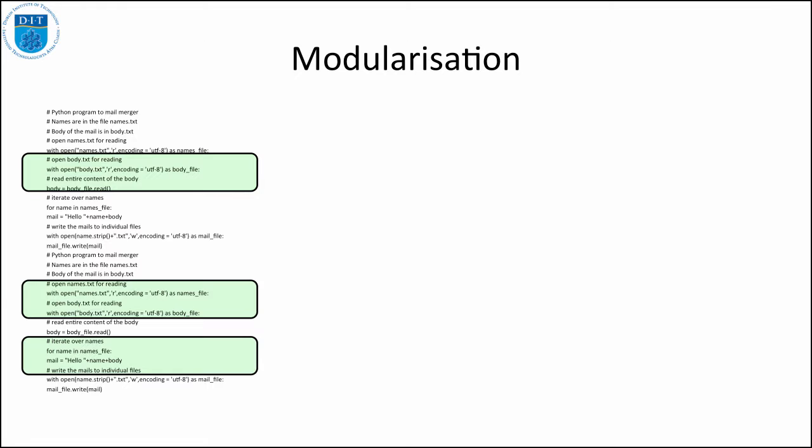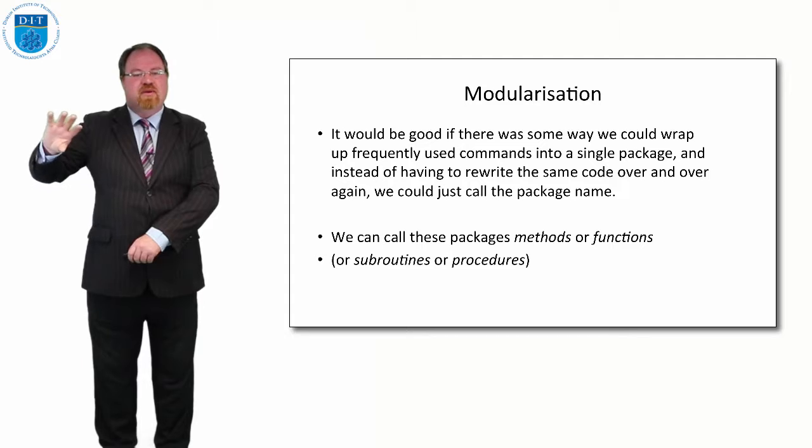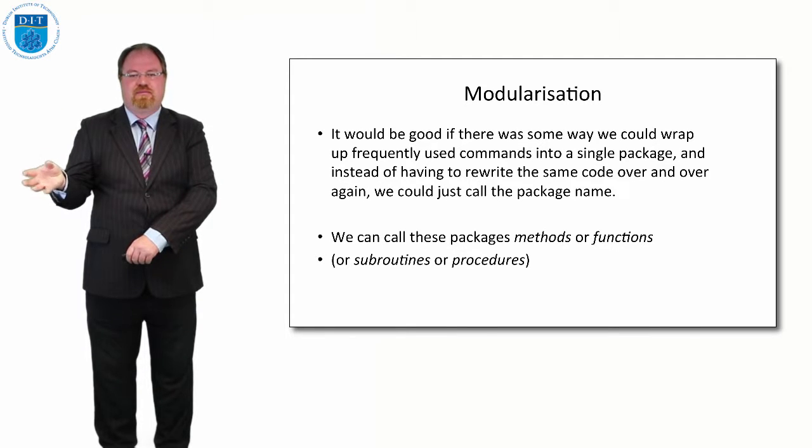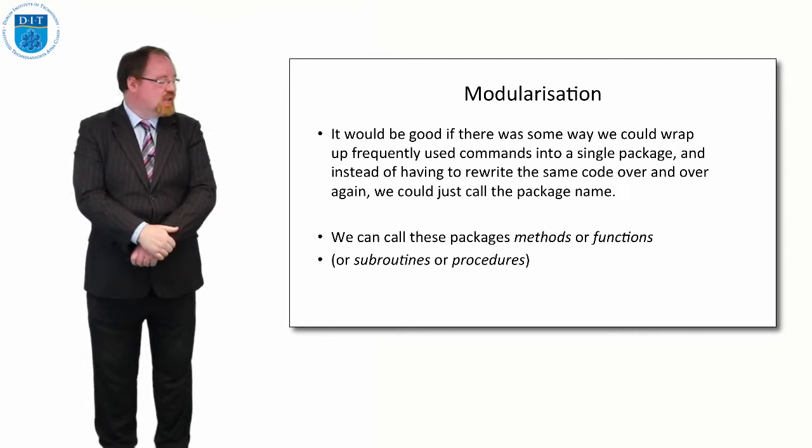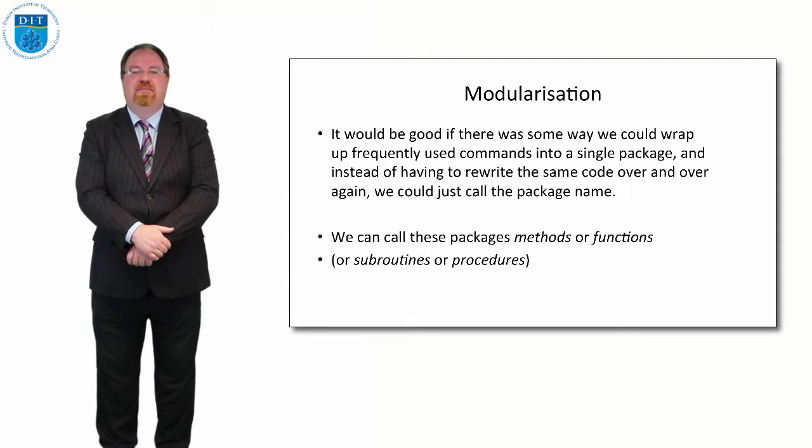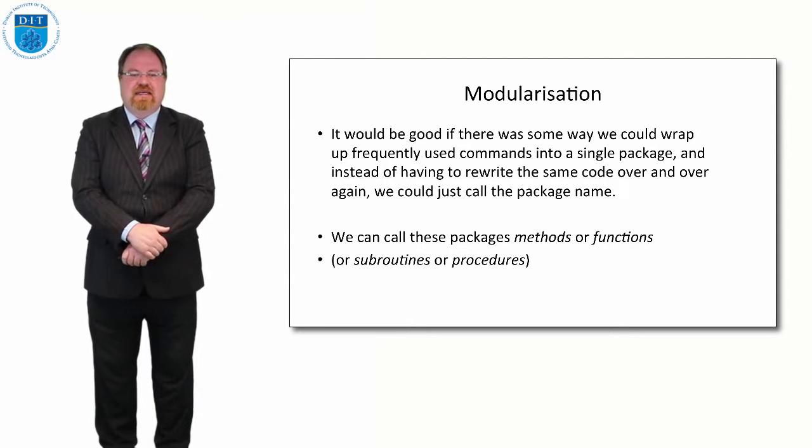It could be code for checking if a number is prime, it could be code for swapping two values, whatever it is, it could be for calculating factorial. Rather than have the same bit repeated, if there's some way we could just extract that out, wrap it around in a handle, and rather than actually put the code in the program, call that handle instead or that name.